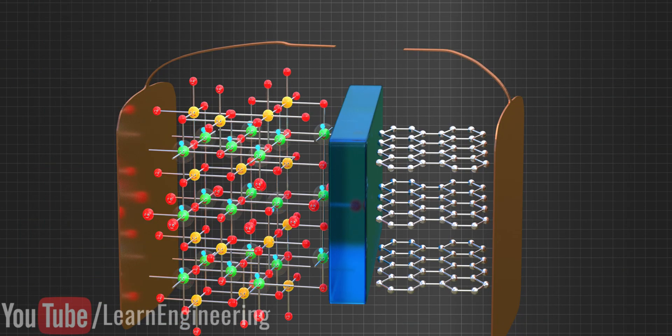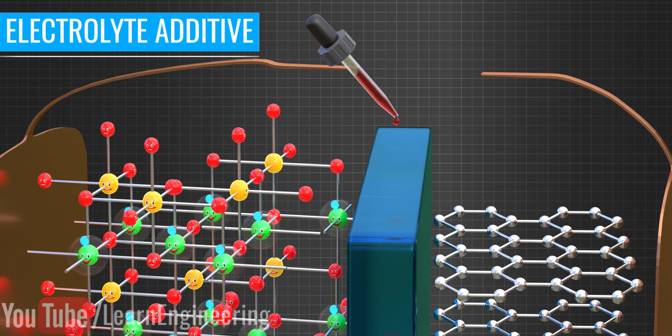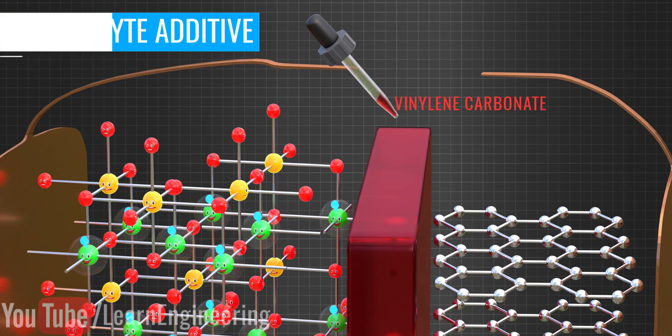However, the longevity of battery can be scalable up to a certain limit with the help of an electrolyte additive. This is like a secret sauce in a recipe that slows down the degradation process and helps to improve the battery life.